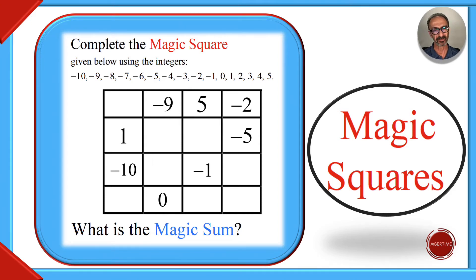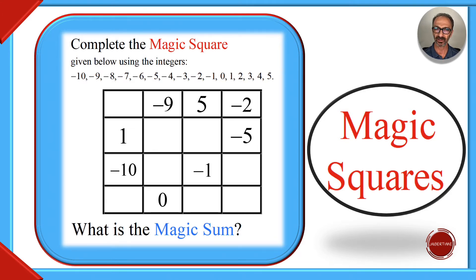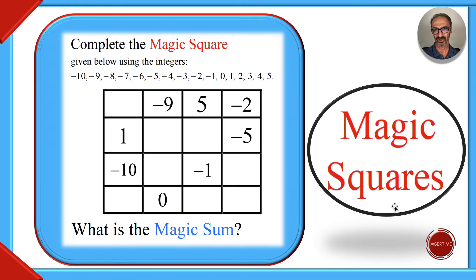Hi, welcome to my channel Jabberting. I'm going to go over a magic square problem. I will be adding more magic squares in the future, but one example will do for this video. Complete the magic square given below using the integers from negative 10, negative 9, negative 8, negative 7, all the way to 5. The numbers are consecutive — not missing any or skipping. Some numbers are already filled in; we're missing some cells and we're going to fill them up. The main part of solving magic squares is finding the magic sum.